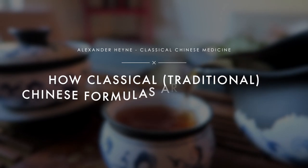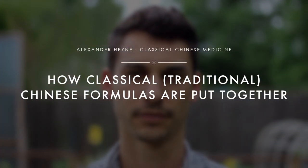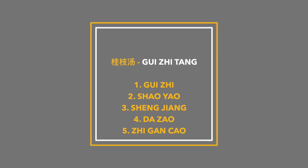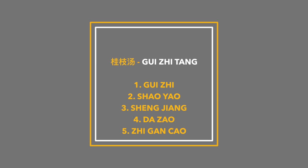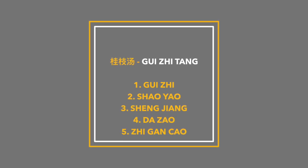So I want to quickly break down probably the most famous Chinese medical formula, gui zhi tang, and show how each herb plays an integral role in putting together the whole formula. I'm Alex Hine, current doctoral student in classical or traditional Chinese medicine and author of the book Master of the Day. In gui zhi tang, there are five key herbs: gui zhi, bai xiao, shengjiang, da zhao, and zhi gan cao.